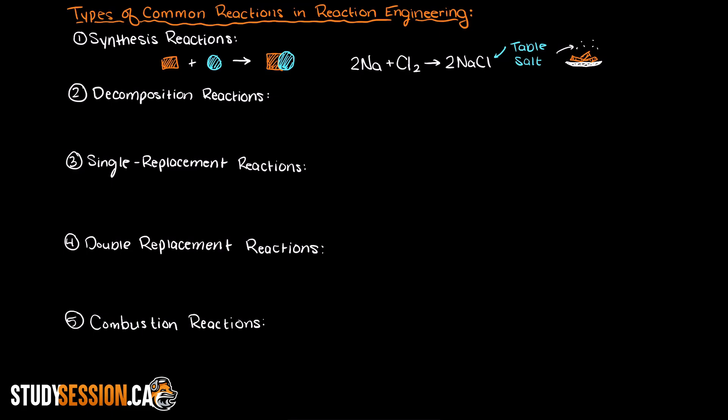The second type of reaction that you will likely run into in this chemical reaction engineering course is a decomposition reaction. This reaction is basically the opposite of the synthesis reaction that we just talked about. We begin with a molecule that looks like this.